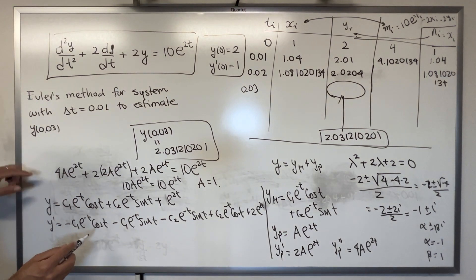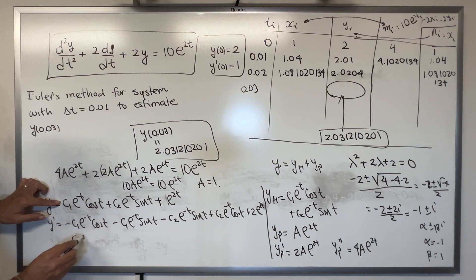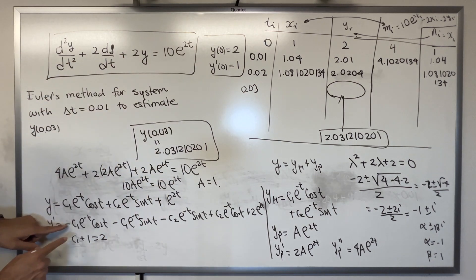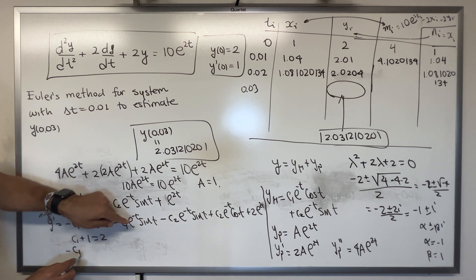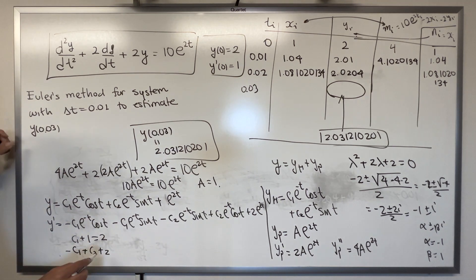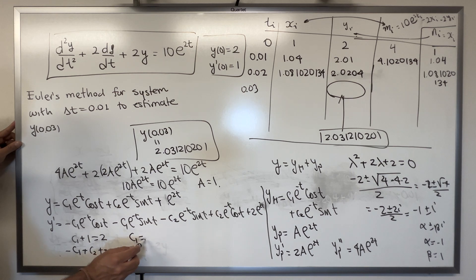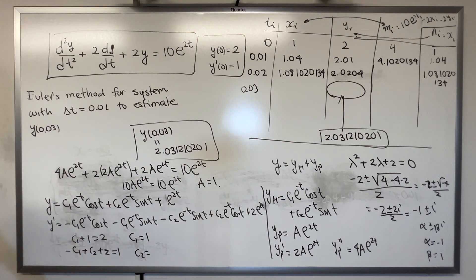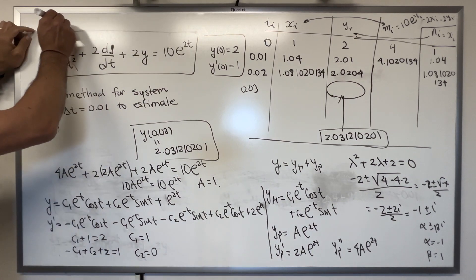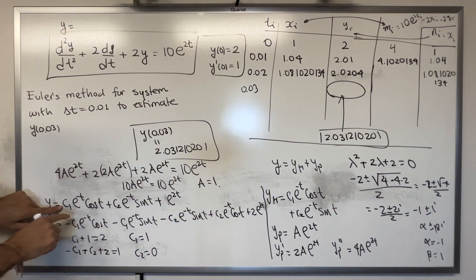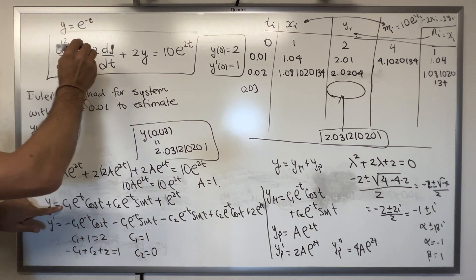Applying the initial conditions: y(0) = 2 gives c₁ + 1 = 2, so c₁ = 1. y′(0) = 1 gives −c₁ + c₂ + 2 = 1, so c₂ = 0. The solution to the IVP is y = e^(−t)cos(t) + e^(2t).